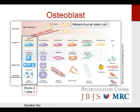Gaucher's disease is the most common lysosomal storage disorder. It's autosomal recessive, very commonly seen in Ashkenazi Jews, and is a glucocerebrosidase defect. The orthopedic manifestations include Erlenmeyer flask femurs and osteonecrosis of the femoral head. These patients frequently have hepatosplenomegaly and anemia.